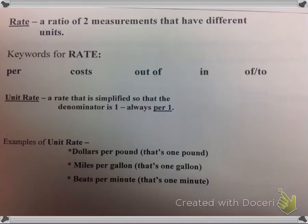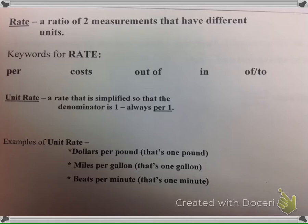Now let's talk about rate. A rate is a ratio of two measures that have different units. Some key words for rate are: per, costs, out of, in, of, or to. A unit rate is a rate that is simplified so that the denominator is 1 — it's always per 1. Examples of unit rate are dollars per pound, miles per gallon, and beats per minute — each expressed per one unit.